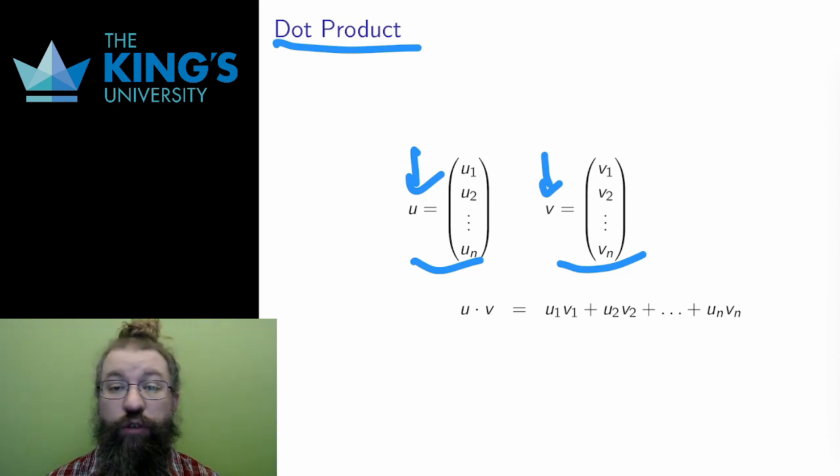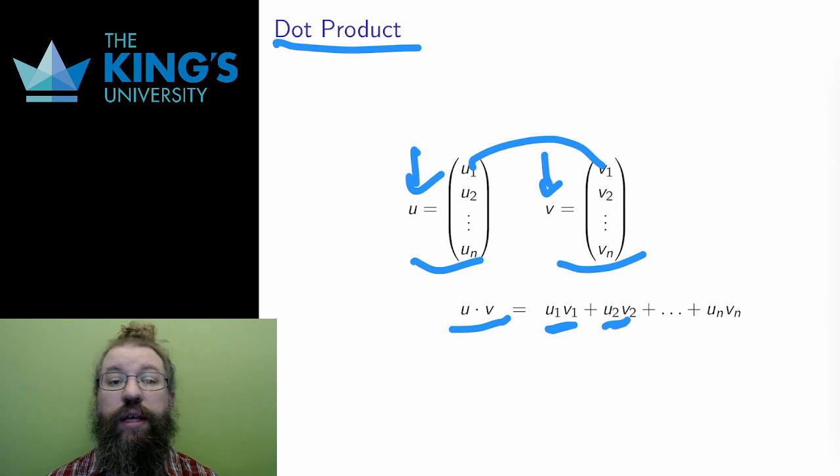Anyway, the dot product of u and v is the scalar I get from multiplying the entries of u and v together in pairs. First by first, second by second, third by third, and so on to the end. Then I take these products and add them all up, and this produces a scalar.